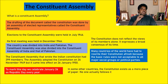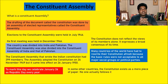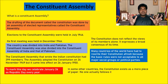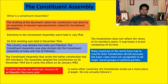We might ask: does the Constitution reflect the views of its members alone, or did it have the views of all the people at that time? For example, Mahatma Gandhi was not a member of the Constituent Assembly, but most of his ideology was taken from his disciples and followers from the Congress party, who were the members of the Constituent Assembly.